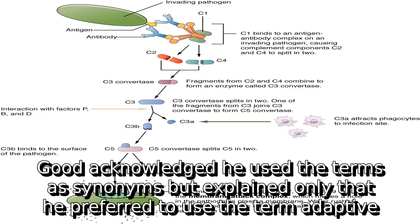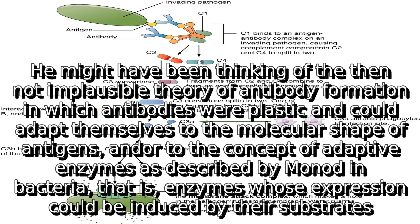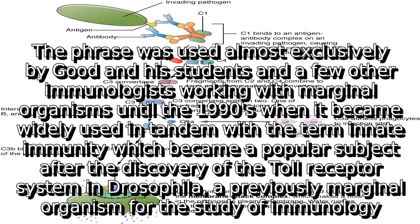Goode acknowledged he used the terms as synonyms but explained only that he preferred to use the term adaptive. He might have been thinking of the then-not-implausible theory of antibody formation in which antibodies were plastic and could adapt themselves to the molecular shape of antigens, and or to the concept of adaptive enzymes as described by Monod for bacteria, that is, enzymes whose expression could be induced by their substrates.